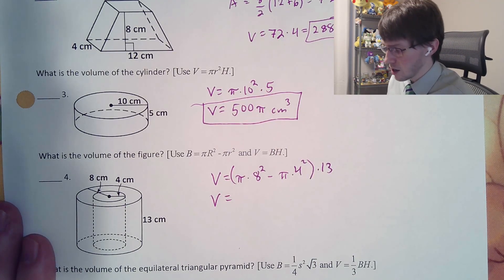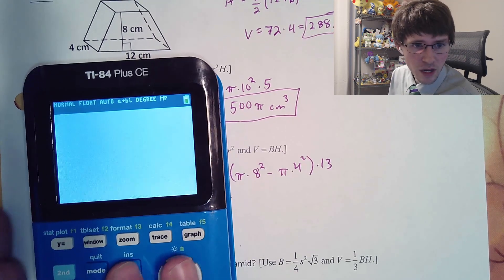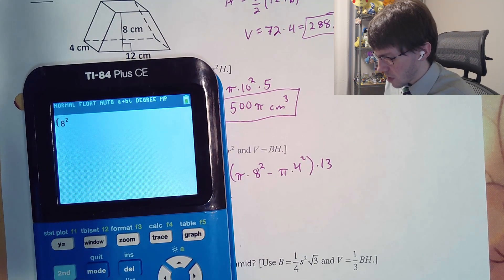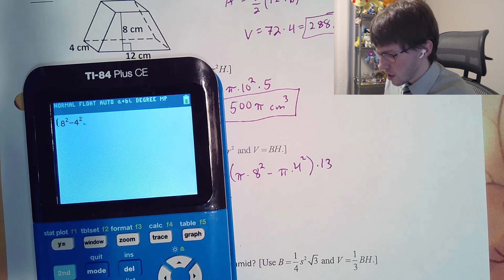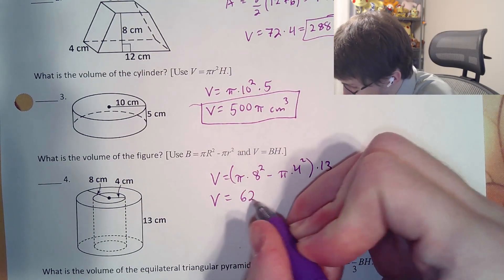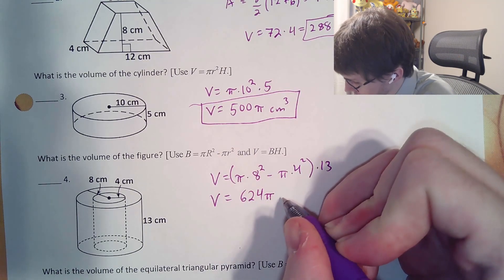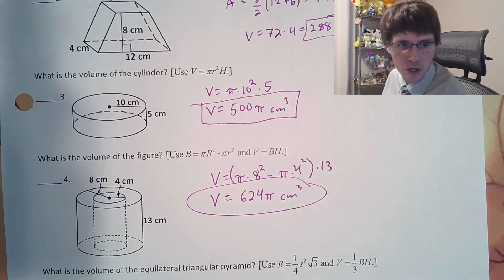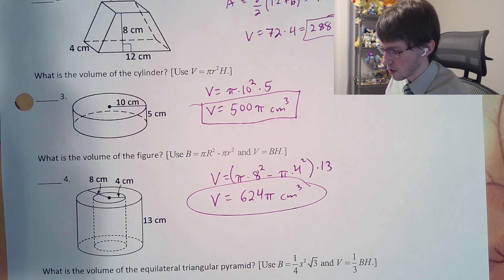Remember, we're skipping the π. So we're typing all this into the calculator. We skip that π. Parentheses 8 squared minus 4 squared, end the parentheses, multiply by 13. Beautiful. 624. But don't forget to put the π back into your answer. That's going to be a common mistake students are going to make, almost guaranteed. Put that π back in. Pretty please.